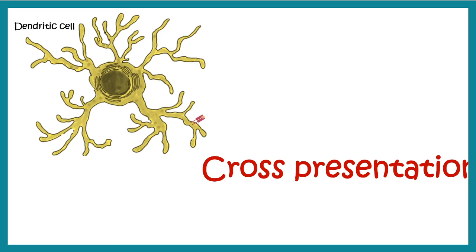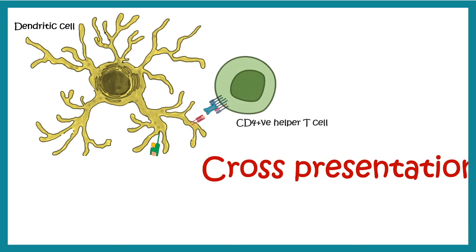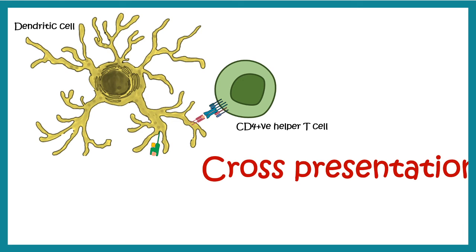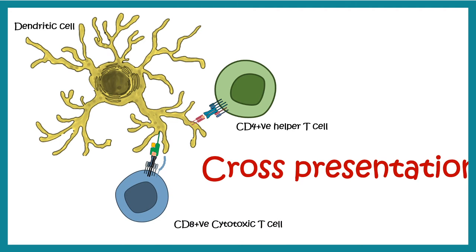Dendritic cells generally express class 2 MHC molecules as professional antigen presenting cells, so they normally present pathogen-derived antigens to helper T cells. However, in rare occasions, helper T cells can give dendritic cells the license to present pathogenic antigens on class 1 MHC molecules. This class 1 MHC-bound antigen is then displayed to CD8-positive cytotoxic T cells, leading to their activation.